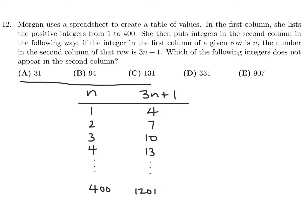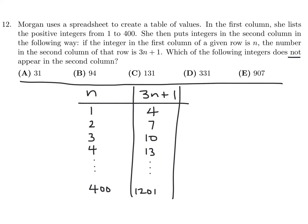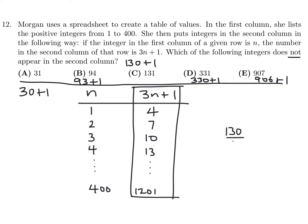Which of the answer choices does not appear in that second column? All numbers in the second column are of the form 3n plus 1 — a multiple of 3 plus 1. Checking: 31, 94, 301, 907 all work. But 131 doesn't work because 130 is not a multiple of 3 — 130 divided by 3 is about 43.3 — so C does not appear in the second column.